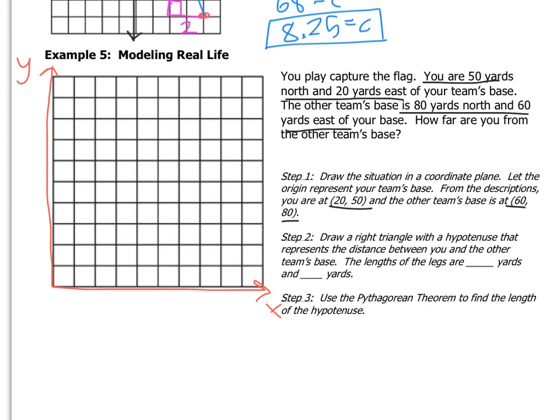So I'm at (20, 50) and your other team's base is at (60, 80). It tells us then to draw a right triangle with a hypotenuse that represents the distance. So let's just finish the picture and then I'm going to let you do it on your own. Let's turn that into a right triangle. So just like what we did up in example four, I want you to finish and solve this right now. Find this value just like we did in the previous example.